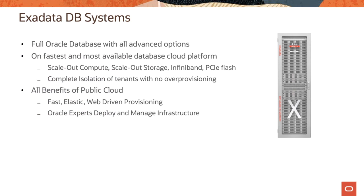Let's now look at the Exadata DB systems. When you deploy an Exadata DB system in Oracle Cloud Infrastructure, you get Oracle Database Enterprise Edition with all the advanced options. Exadata DB systems is Oracle's fastest and most available database cloud platform. You can scale out compute, scale out storage, and it has InfiniBand switches with InfiniBand networking between the database server and storage server. It also has PCIe flash cards attached to the storage server for better performance.